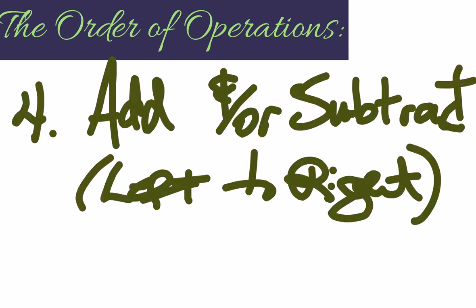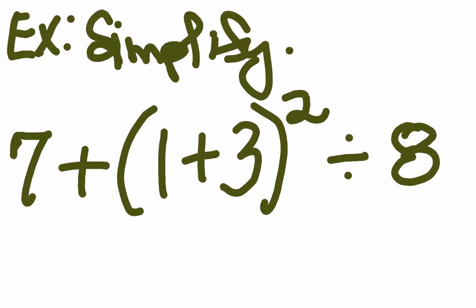Number four, add and or subtract from left to right. Once you're done with this step, you've added and or subtracted from left to right. Left to right is a big deal in those last two things. Once that's done, you should have an answer at that point. And so let's just take a quick look at one more example, and then we'll be done for this lesson. For now, you'll be able to practice.